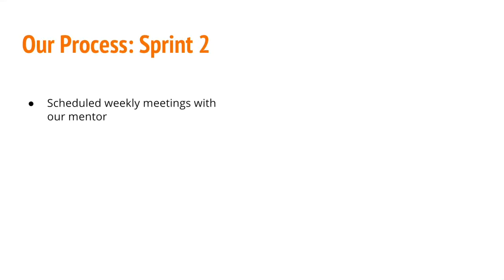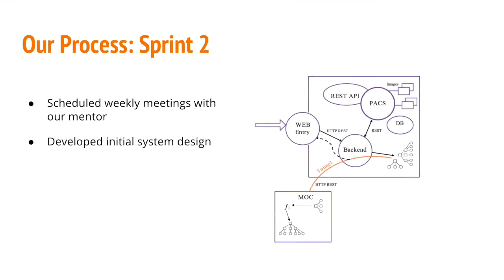By Sprint 2, we initiated weekly meetings with our mentor from the Boston Children's Hospital, which helped us get a better understanding of how CRIS worked and get more comfortable with all the technologies involved. During the sprint, we were also able to set up functioning instances of CRIS running on our local machines. Sprints 3, 4, and 5 were when we made the most progress as OpenShift came into our project. We were assigned three Red Hat mentors who helped us set up three OpenShift nodes on our MOC instance. They set up the user interface, which we then used to start developing and deploying containers on OpenShift.